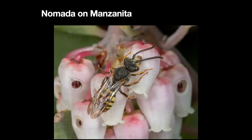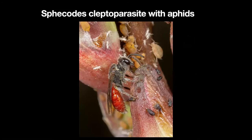Here you have a bee accessing the nectar — this is Nomada, a kleptoparasitic bee. They will lay their eggs in the nest of Andrena, different species. Here you have yet another kleptoparasite, quite different in its biology — it's in the family Halictidae, the furrow bees. What it's doing here is feeding on honeydew — a nectar-type substance secreted by aphids.